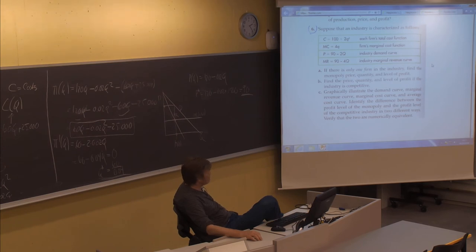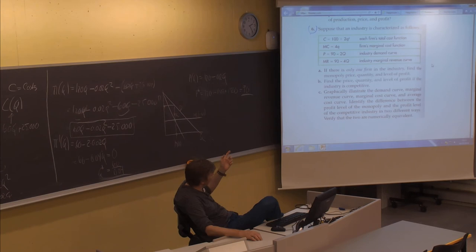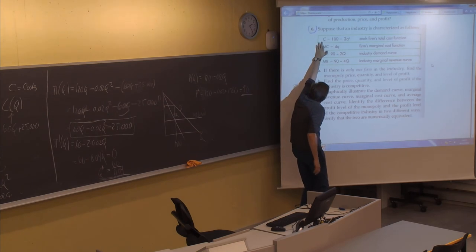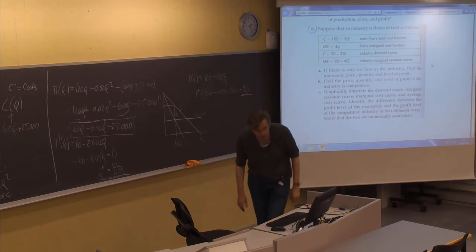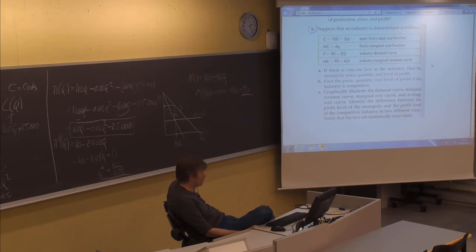The demand curve is p equals 90 minus 2Q, and there's also given an industry marginal revenue curve, which is perhaps unnecessary because we have the demand curve. Price times quantity gives 90q minus 2q squared, and taking the derivative produces 90 minus 4q. So the marginal revenue curve is derived from the demand curve, and the marginal cost from the total cost. It's enough to have two curves; it's nice to have marginal cost and marginal revenue so we can equate them to find the monopoly solution directly.